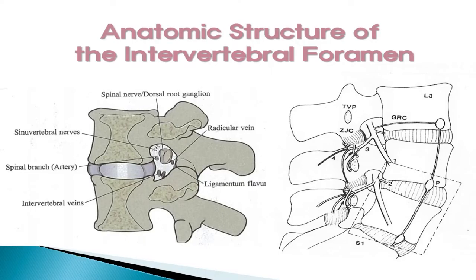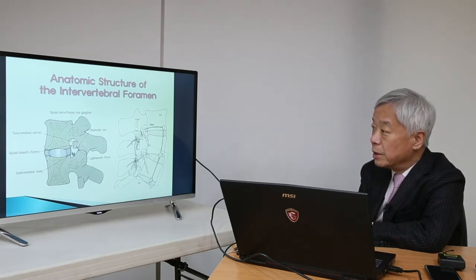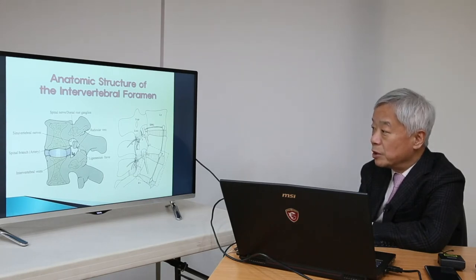As you can see, this is the anatomic structure of the intervertebral foramen. There is a spinal nerve root here, and this is a spinal nerve and spinal branch of the artery on the anterior side of the vertebral foramen. There are also veins and ligamentum flavum here. The spinal artery is the dangerous structure, but it is located in the anterior part of the foramen. So on the posterior part, there are no dangerous structures at all. Therefore, if we approach the posterior side of the vertebral foramen and vertebral canal, then we are safe.